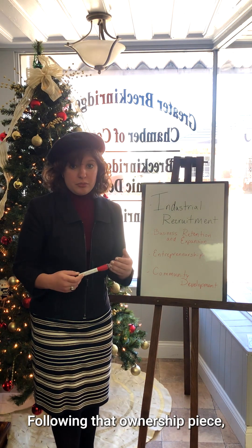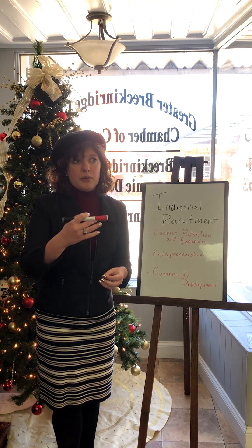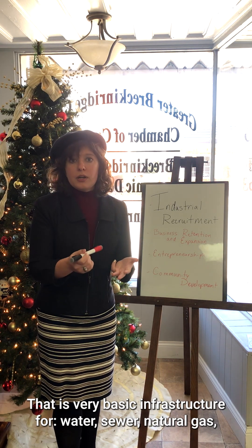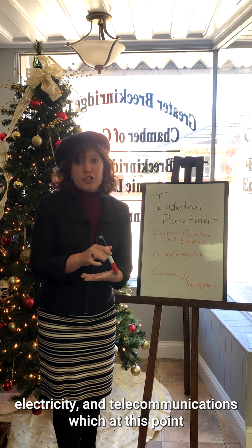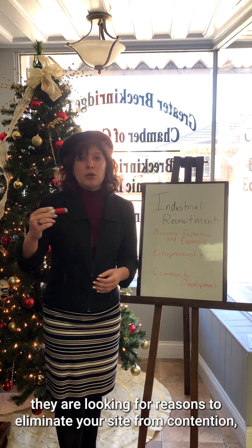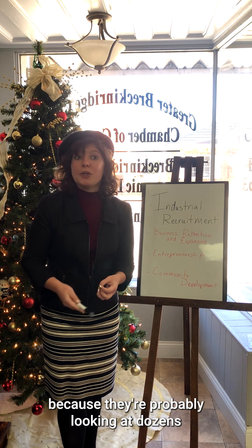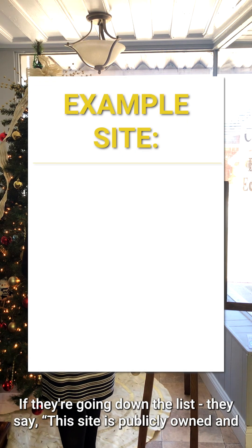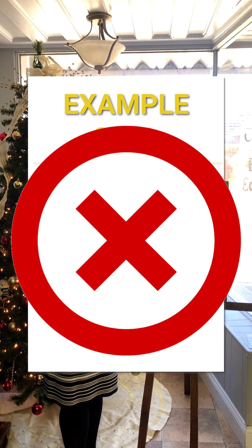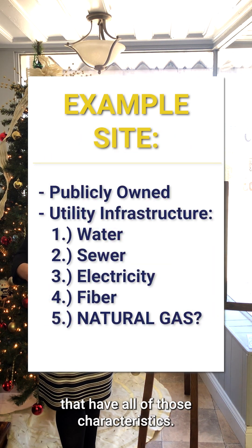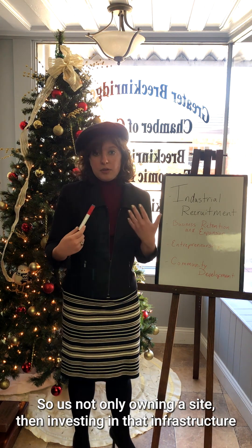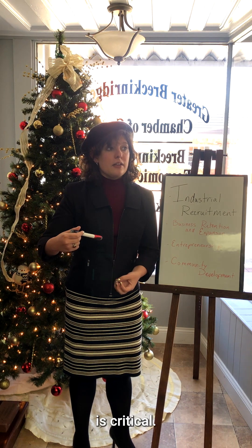Following that ownership piece, most companies are looking for basic utility infrastructure to already be on site — that is water, sewer, natural gas, electricity, and telecommunications, which at this point means fiber. When a company or consultant is looking at a site, they are looking for reasons to eliminate your site from contention because they're probably looking at dozens and dozens of potential industrial sites. So if they go to the list and see a site that is publicly owned and has water, sewer, electricity, fiber, but no natural gas — that site is no longer in contention if there are other sites that have all of those characteristics. Not having one of those pieces is one of the quickest ways to get a site eliminated from contention. So not only owning a site but investing in that infrastructure is critical.